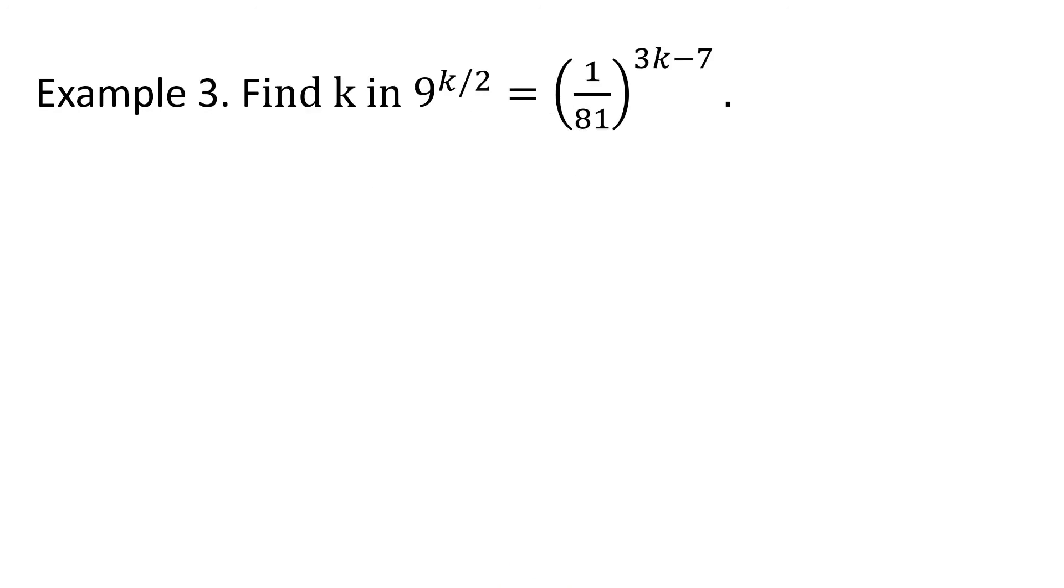Example 3: Find k in 9 raised to k over 2 power equals 1 over 81 to the 3k minus 7. This is the given equation. We are going to solve for the unknown variable k which functions as an exponent in this equation. So the first goal to meet again is to make their bases equal or the same. How will we express 1 over 81 in terms of 9? We all know that 81 is 9 squared. So this part may be rewritten as 1 over 9 squared. However, 1 over 9 is not yet 9. For us to make this 9, we must move this to the numerator.